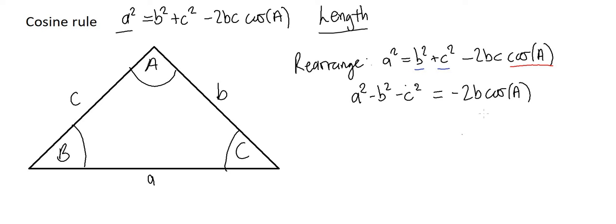Next thing I'm going to do. Now minus 2bc is multiplying the angle, so I'm going to divide by minus 2bc. Okay, so I then will have a² minus b² minus c², all divided by minus 2bc. That will give me cos(A).